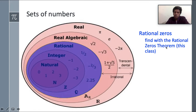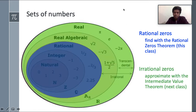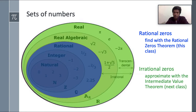In this class we will focus on the rational zero theorem. Irrational numbers can be approximated using the intermediate value theorem, which we will discuss briefly here and in more detail in the next class — how to do the approximation using the intermediate value theorem.